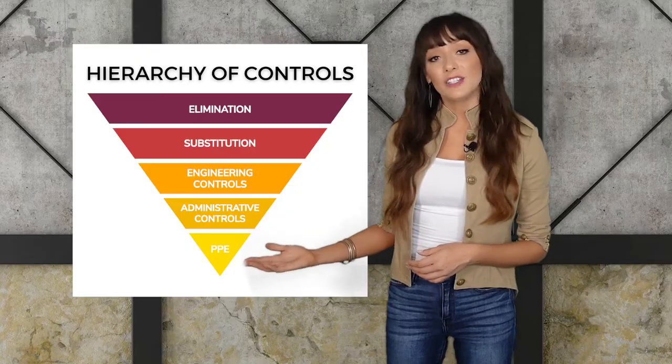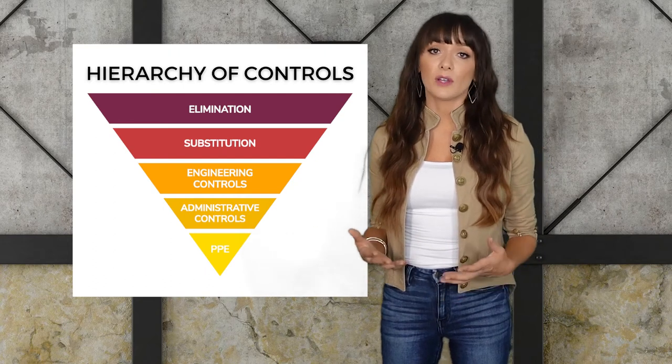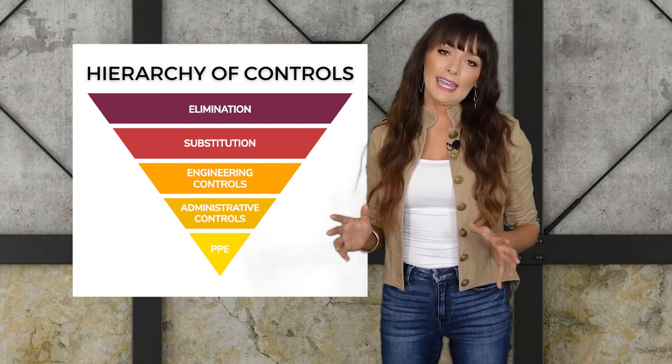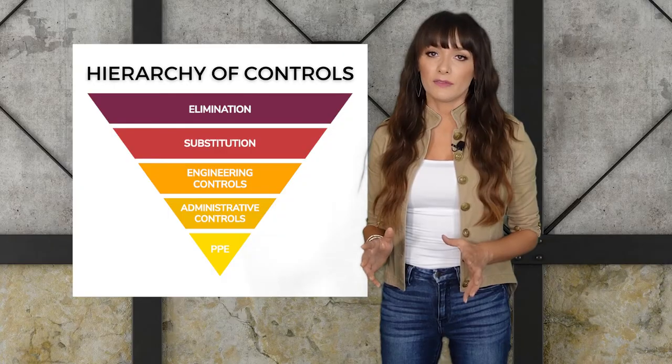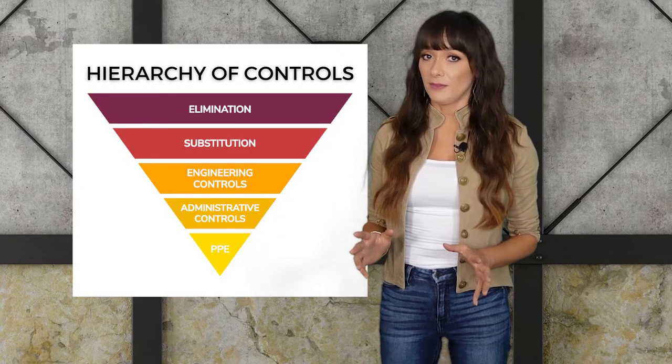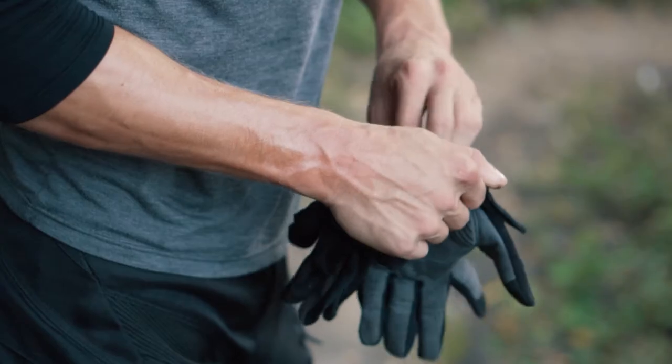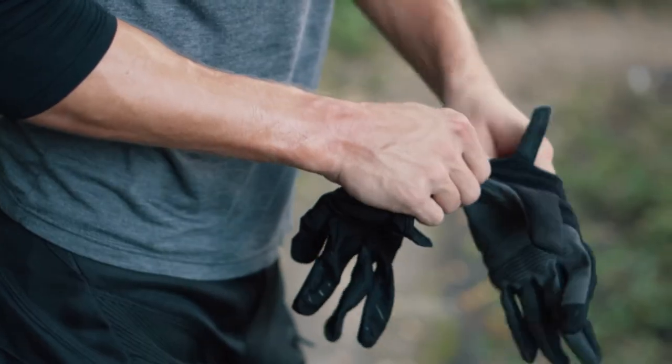Lastly, you decide to implement personal protective equipment as the last line of defense, just in case the administrative controls fail. You issue body armor for the zookeepers. Then you figure, since guests don't really feed the tiger and are pretty low risk, you just give them some cut-resistant gloves.